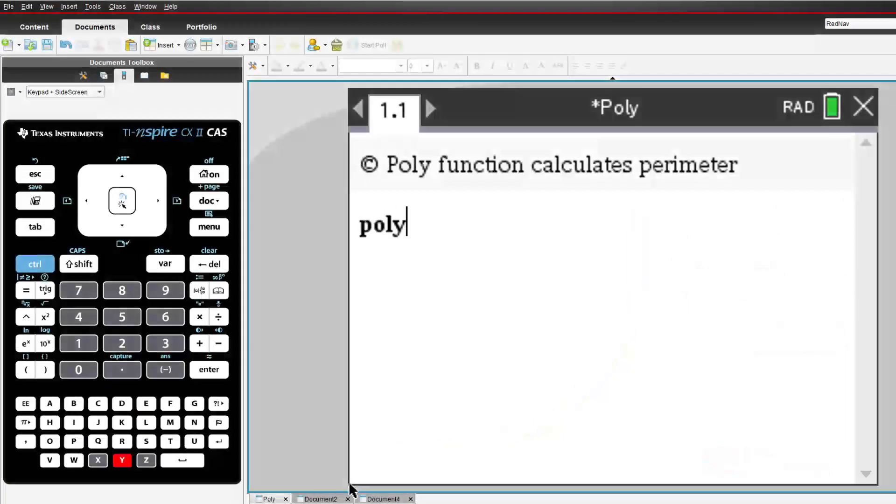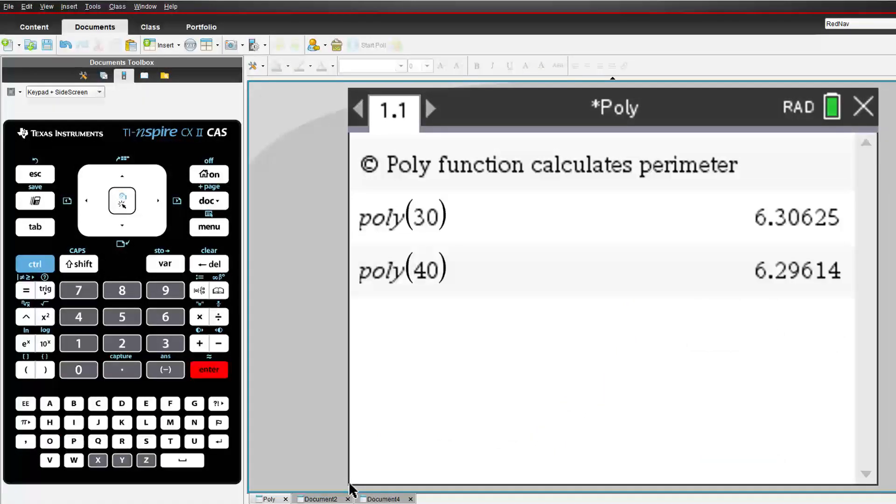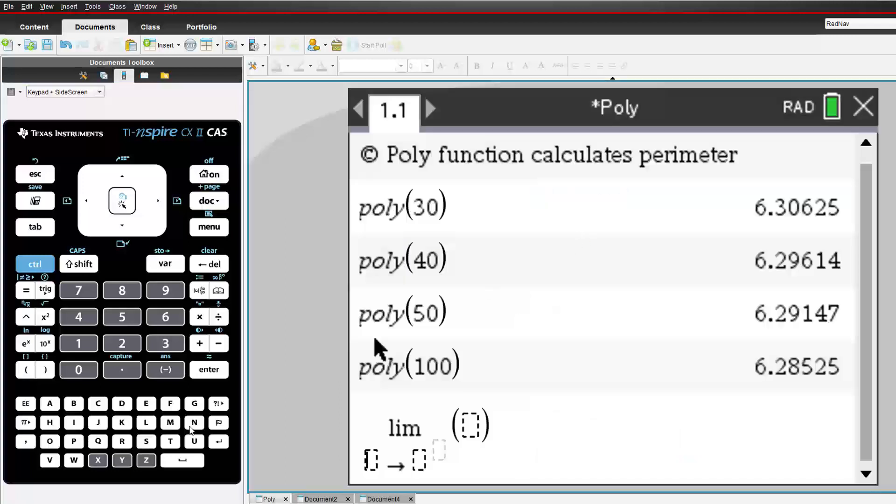We cannot have a regular polygon with infinitely many sides, but we can imagine it. And more importantly, we can determine the perimeter of such a polygon, and therefore, the circumference of the circle.